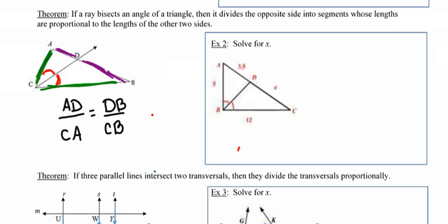So when I take a look at example two here, I've got this segment that's bisecting this angle, and that's important to notice. I can compare the length of AB, which is 3½, to its adjacent side, 5, is going to be equal to the same ratio when I compare X to its adjacent side, which is 12.